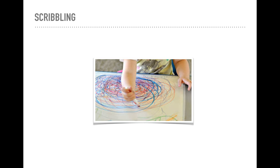The first stage is known as the scribble stage. It typically occurs in children ages one to three years old. Children at this stage are engaged in the physical activity of drawing. They enjoy the movement of making marks. At this stage, there is no connection between the marks and the representation of any objects.